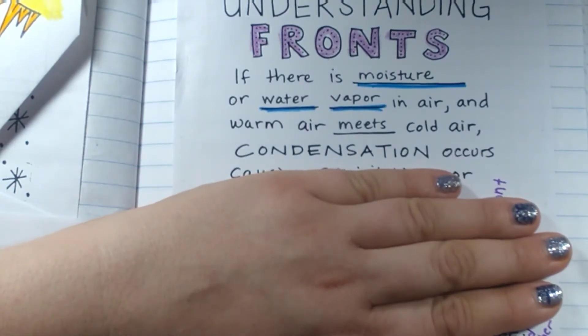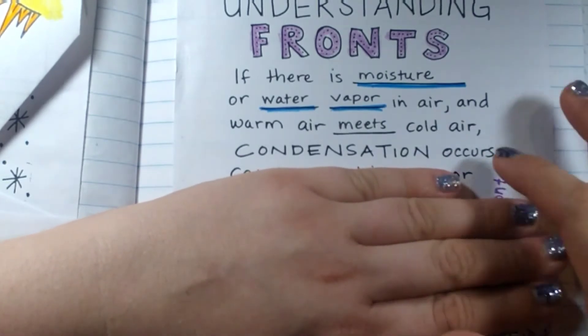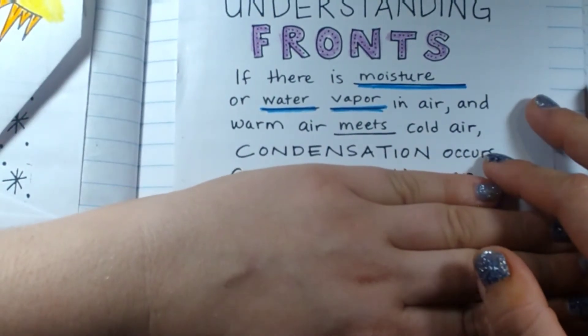Just like when something warm is around a glass of ice water and it touches the ice water, then it condensates on the side of the glass. So condensation will occur creating our cloud.